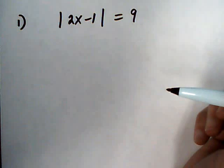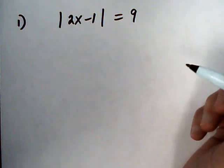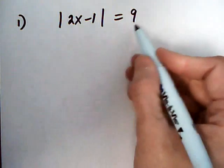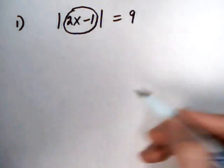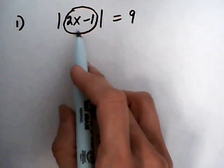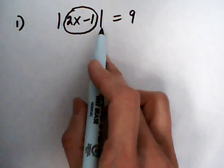This video will have the solutions to quiz 4.3. If we have the absolute value here equal to 9, this will work out if the insides are equal to either 9 or minus 9 because the absolute value will make the minus sign go away.